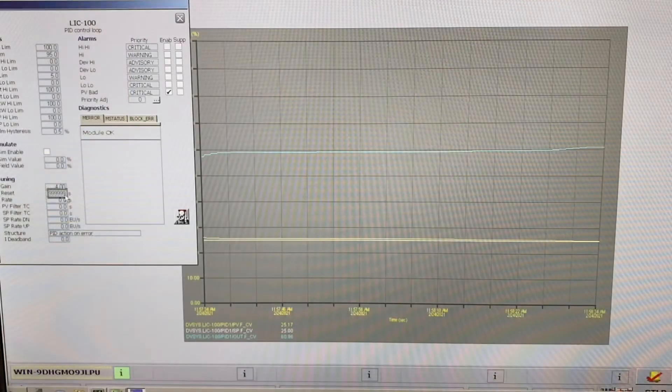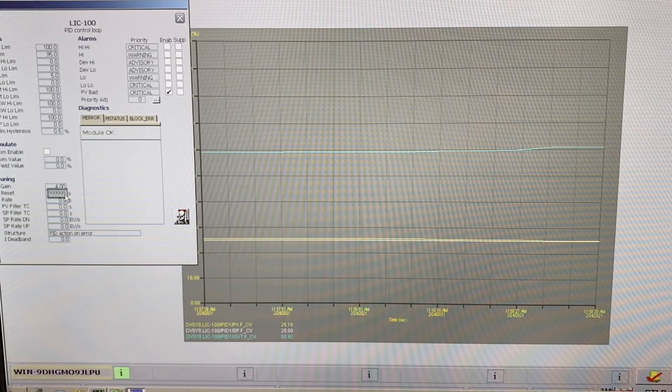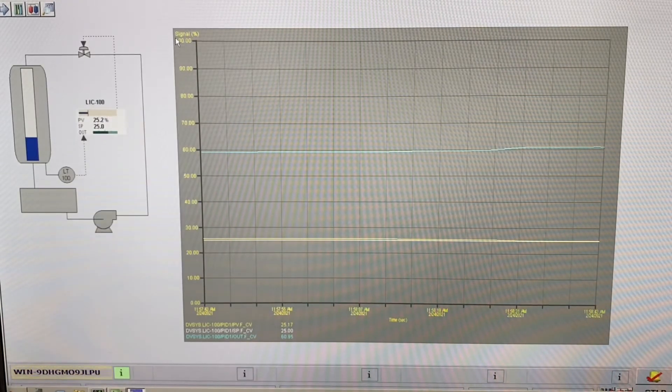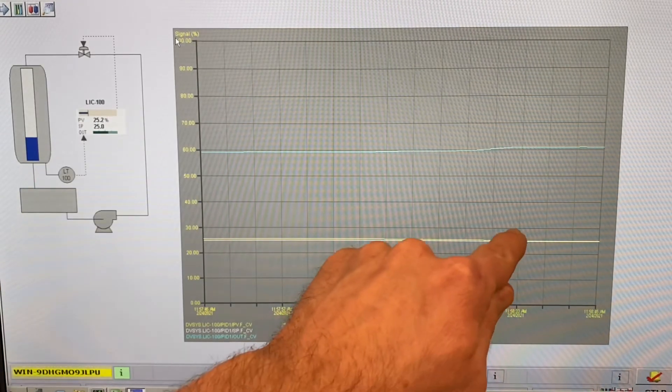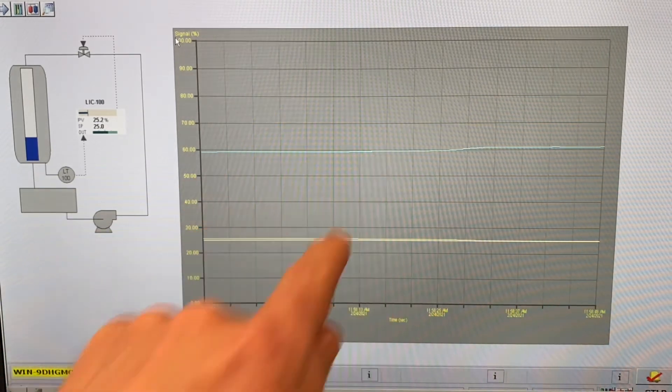So now we're going to demonstrate derivative here. We're first going to compare it to a proportional only controller. So right now, I've got the controller set up for proportional only and what we're going to do is we're going to open the valve on the bottom of this tank and let the level start draining and we want to see how the controller output signal, the signal out to the valve responds.